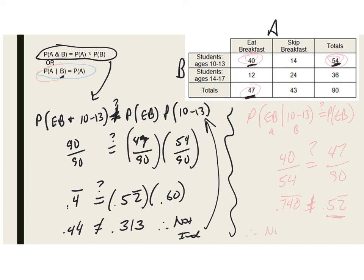Both methods show the same thing in two different ways — that these events are not independent. The second method is easier to interpret because you can see directly that a characteristic is influencing the probability. In the real world, this is relevant whenever we ask whether a demographic characteristic changes the probability of some behavior or outcome. To conclude: because P(eats breakfast | age 10-to-13) ≠ P(eats breakfast), these two events are not independent. We'll see you in probability lesson number three.